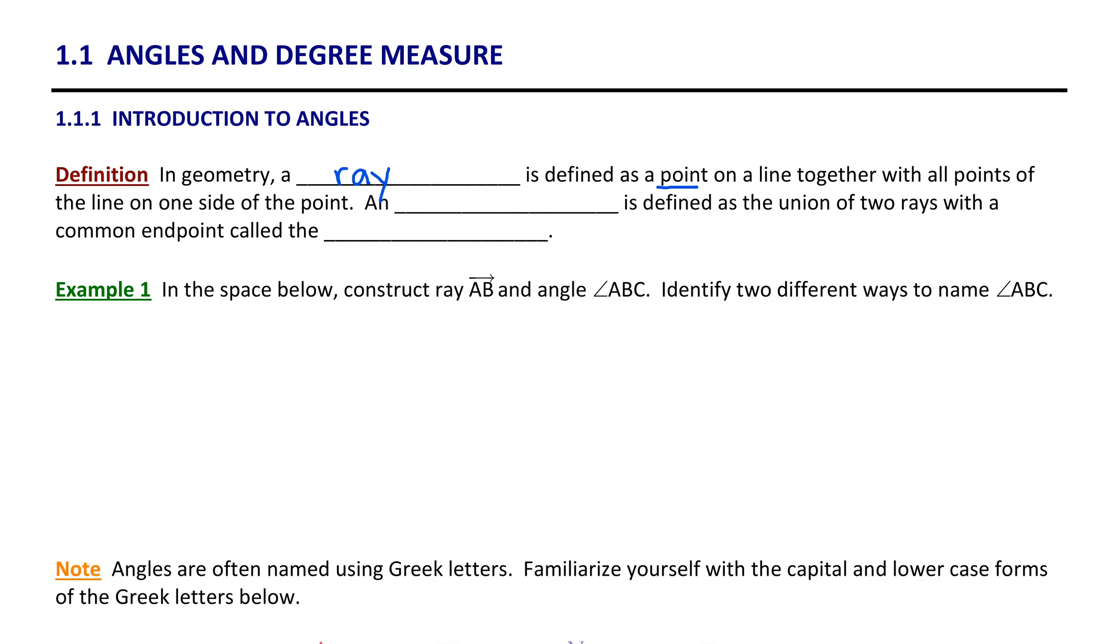Then an angle is defined as the union of two rays with a common endpoint called the vertex. Let's add a visual to this definition.